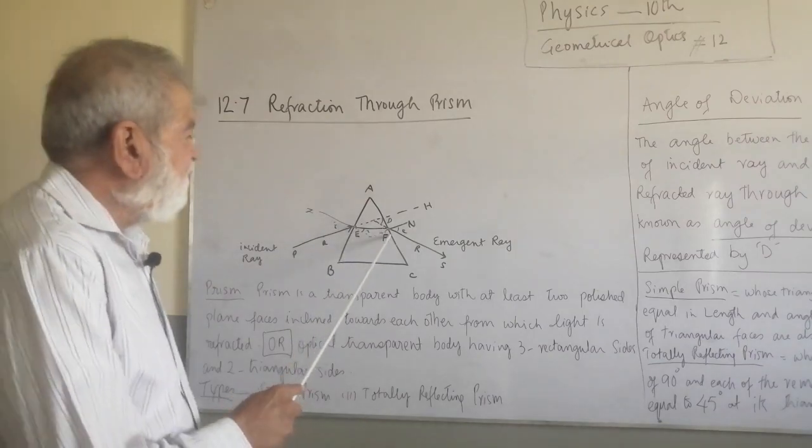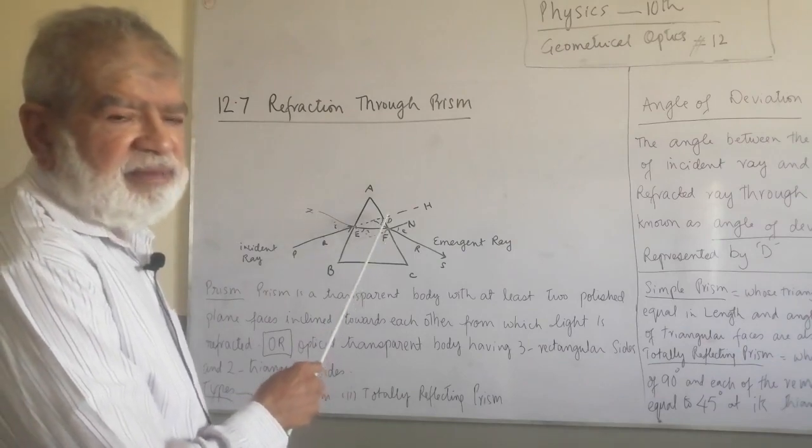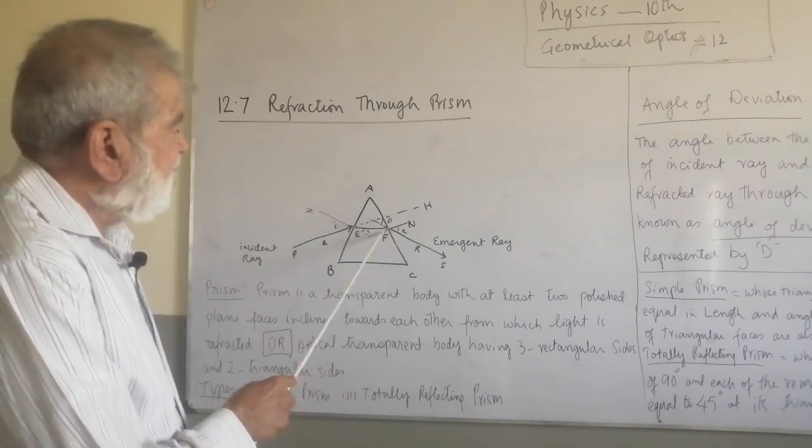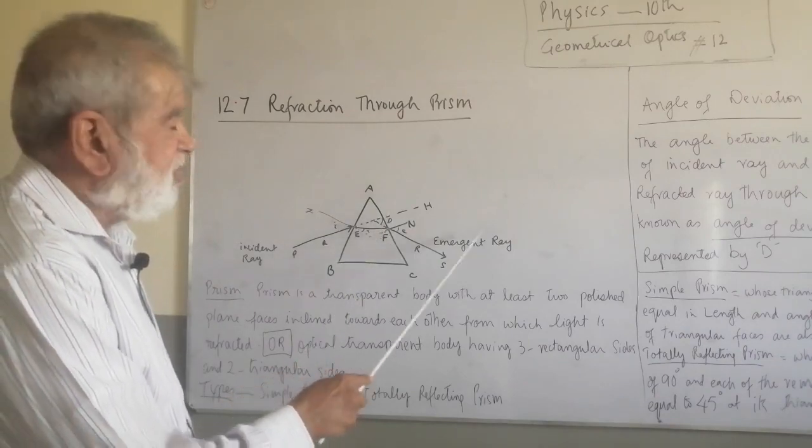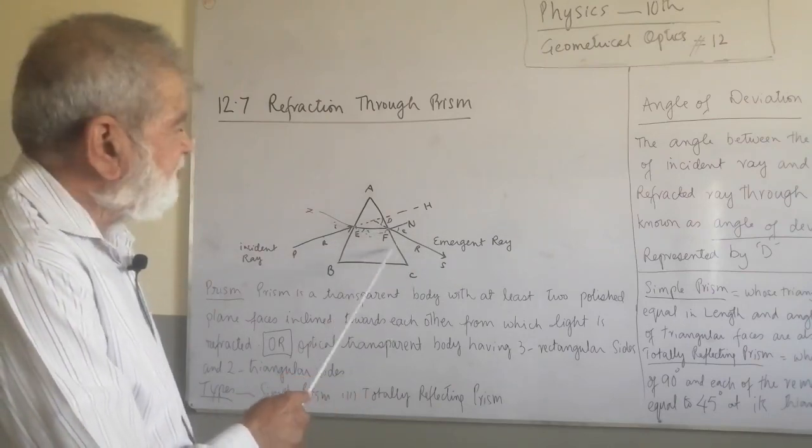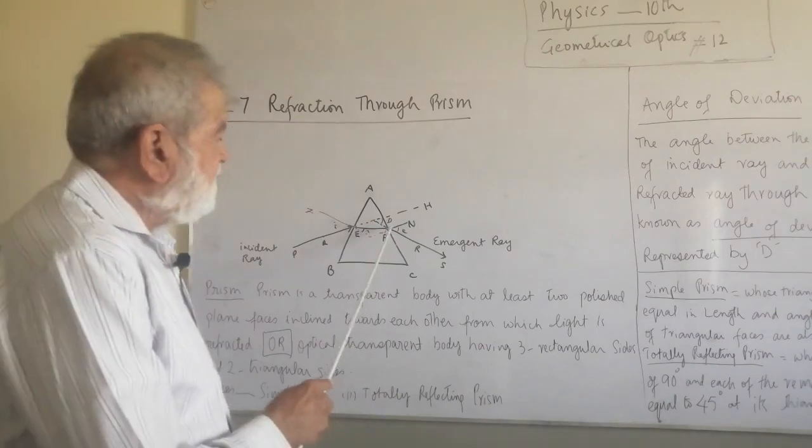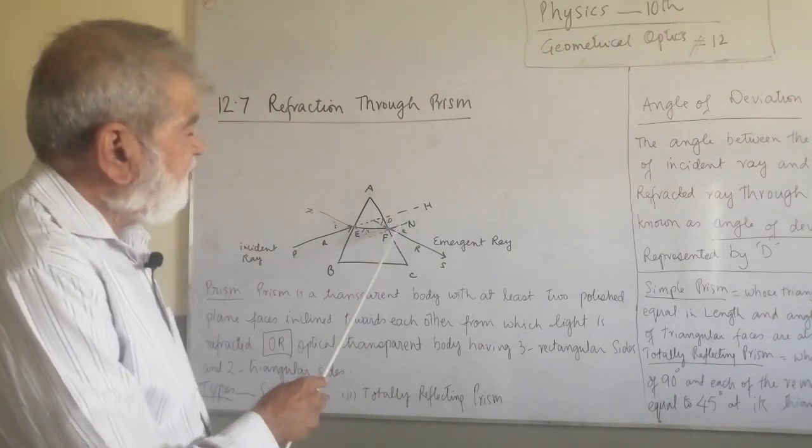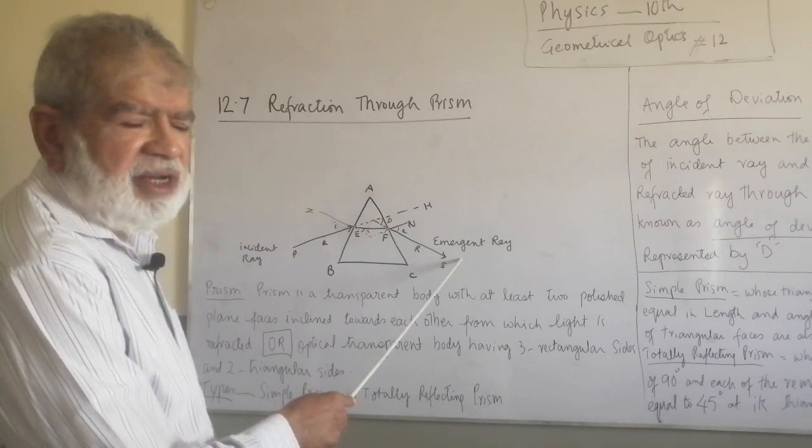At point F, it emerges out and instead of going straight, it deviates towards the path RS. This from point F to S is known as emergent ray.